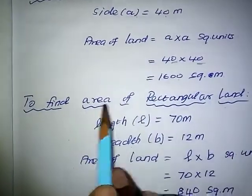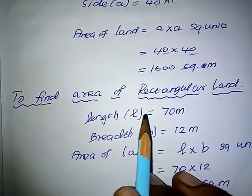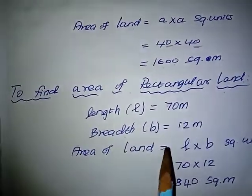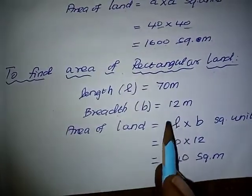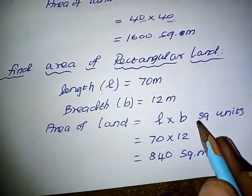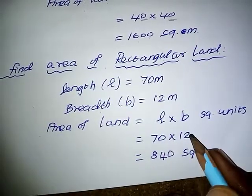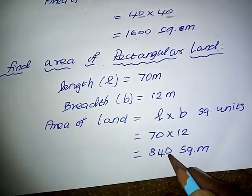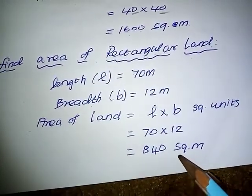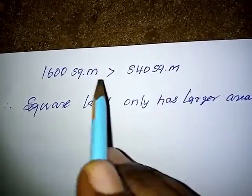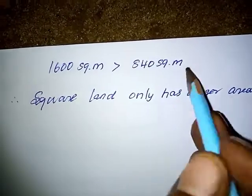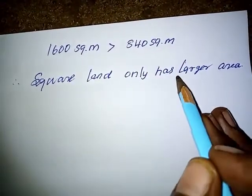Next, find area of the rectangular land. Length L equals 70 meters, breadth B equals 12 meters. Area equals L into B. So 70 into 12: seven 12s are 84, then one zero — 840 square meters. From this, 1600 square meters is larger than 840 square meters, so the square land has the larger area.